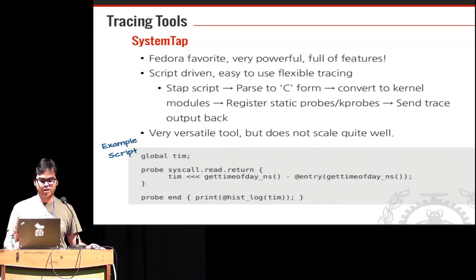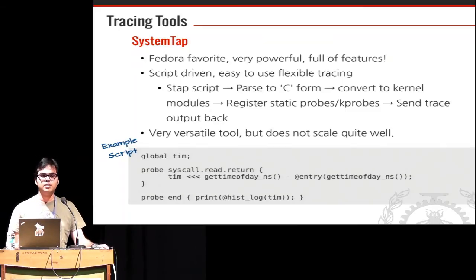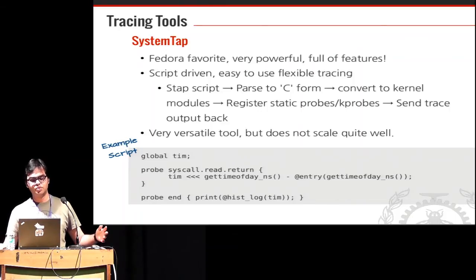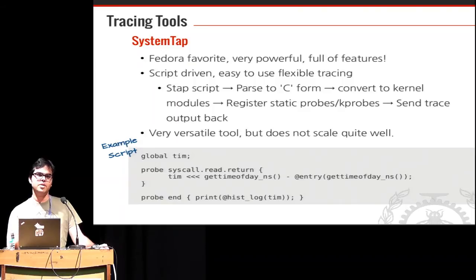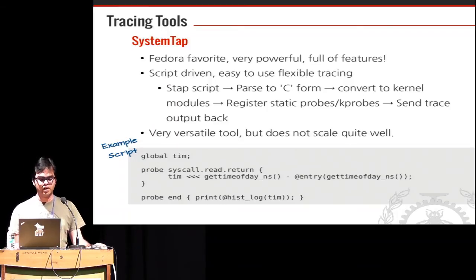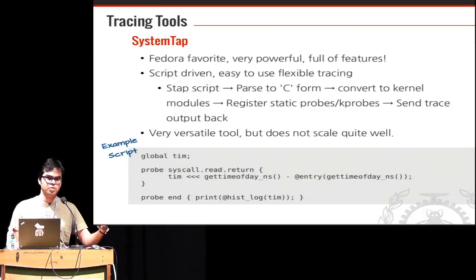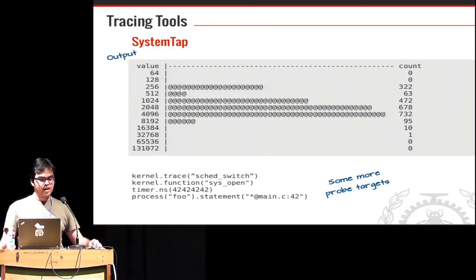SystemTap is the favorite of Fedora folks — very feature-rich. It's a bit less scalable but works really well on Fedora/Red Hat infrastructure. It's similar to DTrace: SystemTap scripts get passed to C, converted into modules, executed, and data is sent back. You can do 'probe syscall.read.return' to find the time taken for every read syscall and print a histogram — there are very cool features.